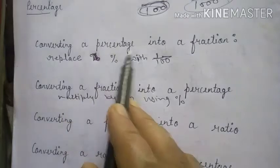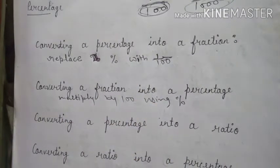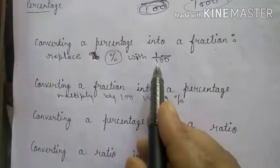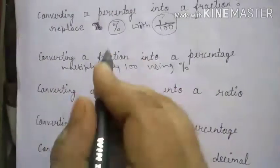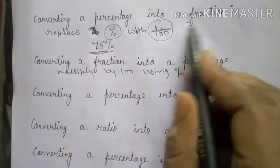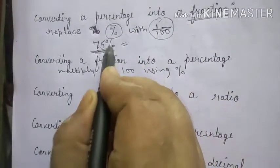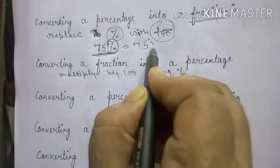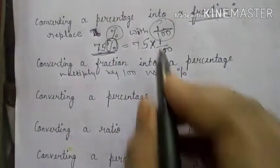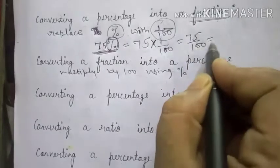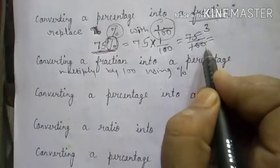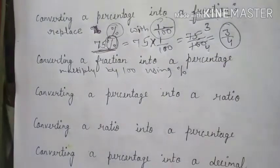The next topic is converting a percentage into a fraction. If there is a number with percentage, we have to remove the percent sign and multiply that number by 1 upon 100. For example, 75% can be written as 75 upon 100. Now we convert to simplest form by cancelling by 25: 75÷25 = 3 and 100÷25 = 4, so the answer is 3 upon 4.